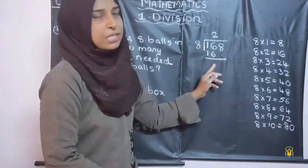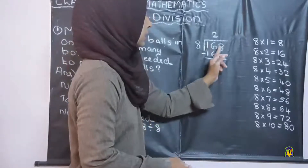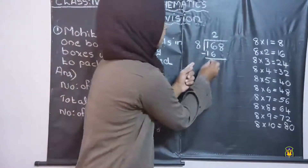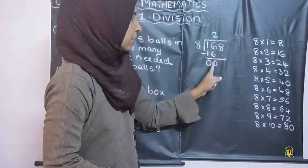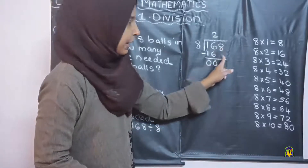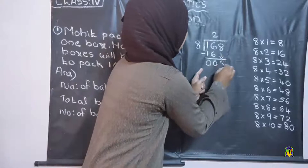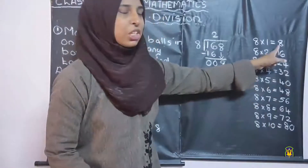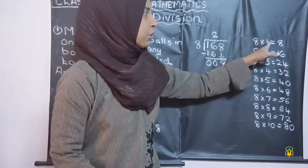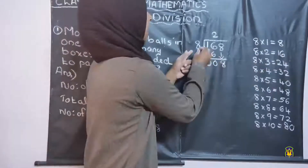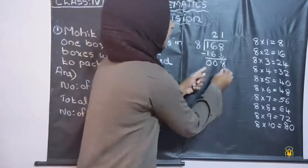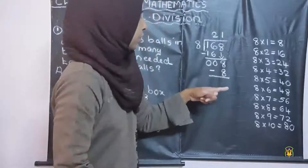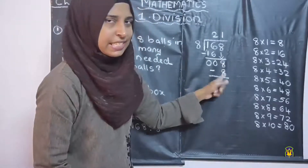Next step, we want to subtract 16 minus 16 — that is 6 minus 6, which is 0, and 1 minus 1, which is also 0. Next, here we have 0, so we want to bring down 8. 8 is equal to 8 and in the multiplication table, 8 into 1 is equal to 8. So we can write 1 above, and 8 into 1 is 8. Next step, we want to subtract — 8 minus 8 is 0.